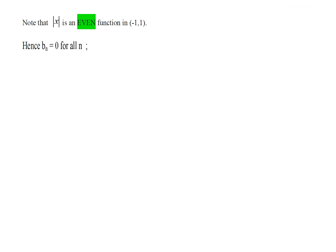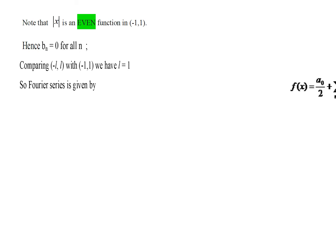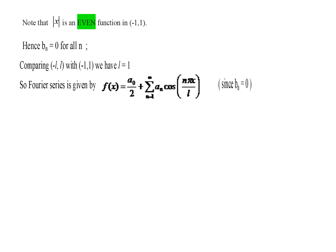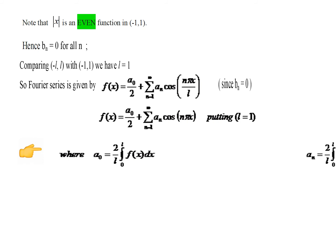When we observe the function mod x, it is an even function. For an even function, bn will be 0 for all n, and the formulas for a naught and an will be slightly different. Comparing the interval minus l to l with minus 1 to 1, we have l equal to 1. The Fourier series is given by f of x equal to a naught by 2 plus summation an cos(nπx/l), since there is no bn term. Replacing l as 1, we have this expression.